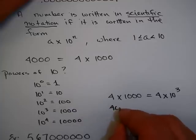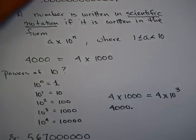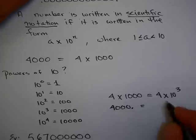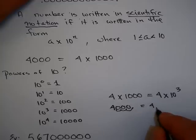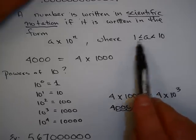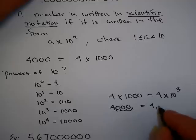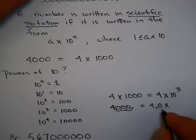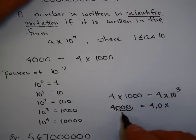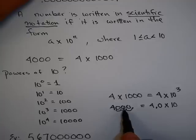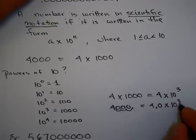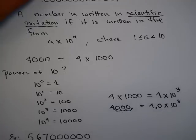Another way to think about this: if you consider the number 4,000, the decimal point is at the end. To write it in scientific notation, I have to move the decimal point so that there's just one digit in front of it, because that number has to be between 1 and 10. So I write 4.0, or just 4. Since 4.0 is much smaller than 4,000, I've got to multiply it by 10 — 1, 2, 3 times. So 4,000 in scientific notation is 4 times 10 to the 3rd.